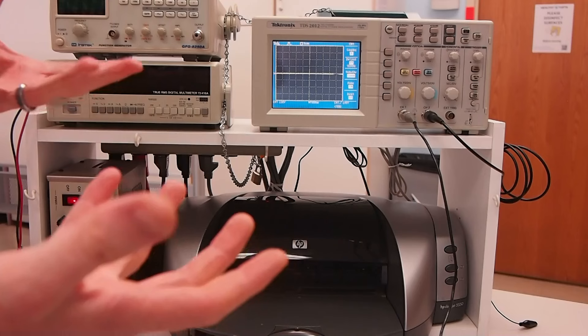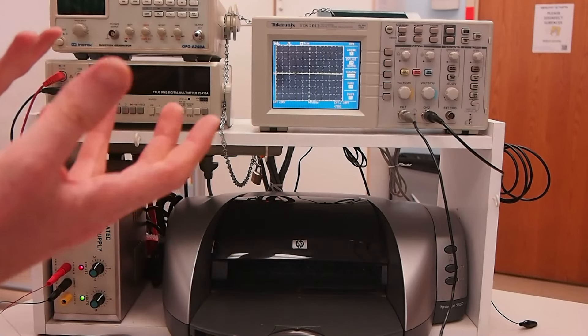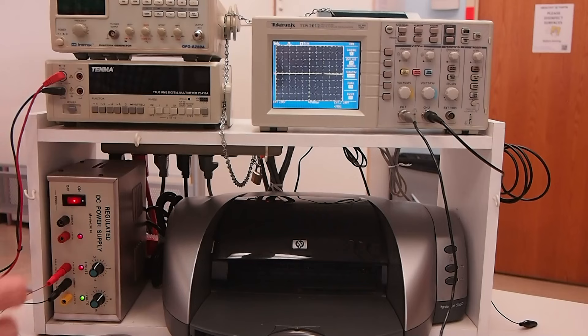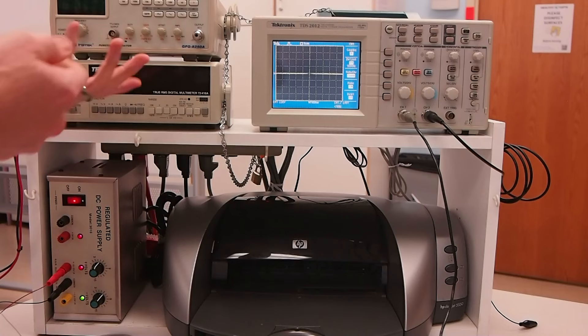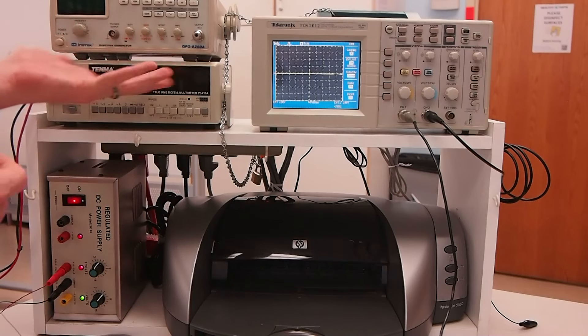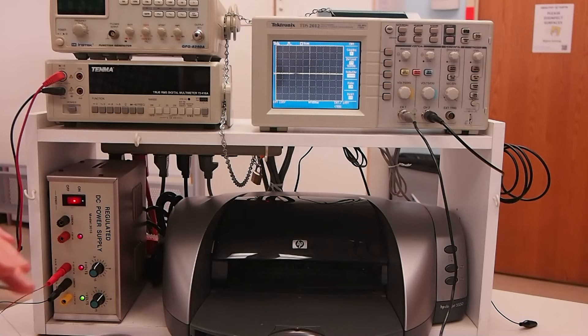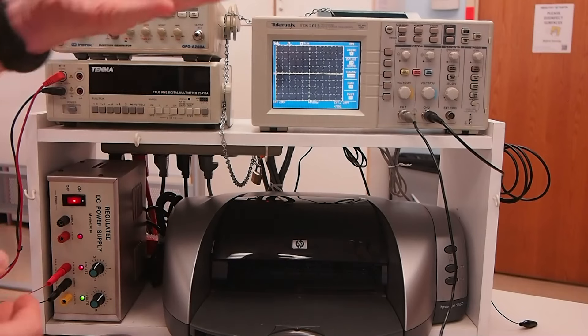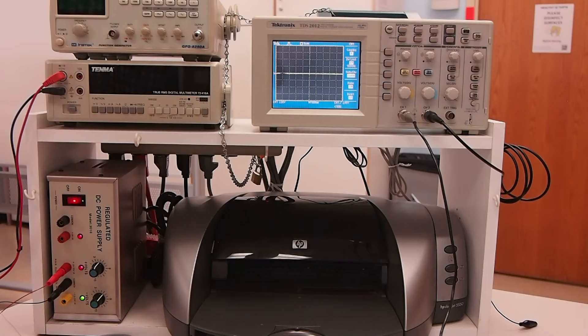So the oscilloscope is fundamentally a device that can plot voltage as a function of time, whereas the meter is just measuring it at a particular point in time and your eyeballs have to watch the screen and watch the digits as they change. The oscilloscope will plot it on a graph and let you see things that change very, very quickly.